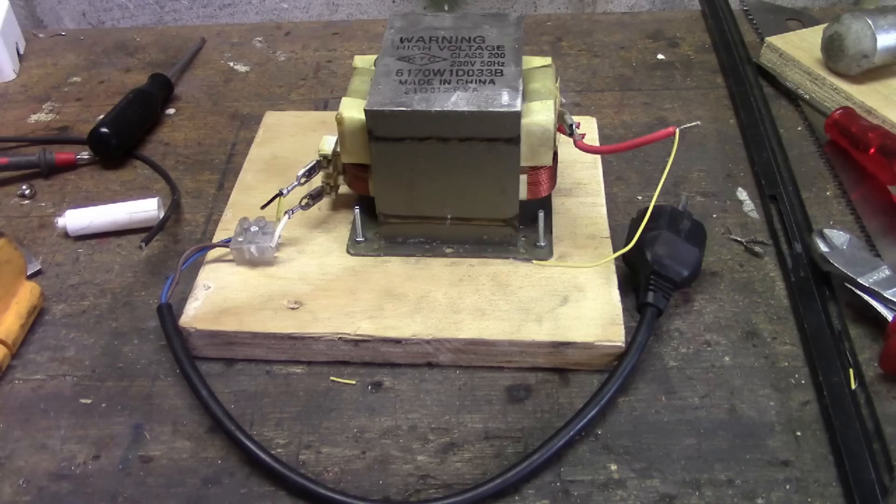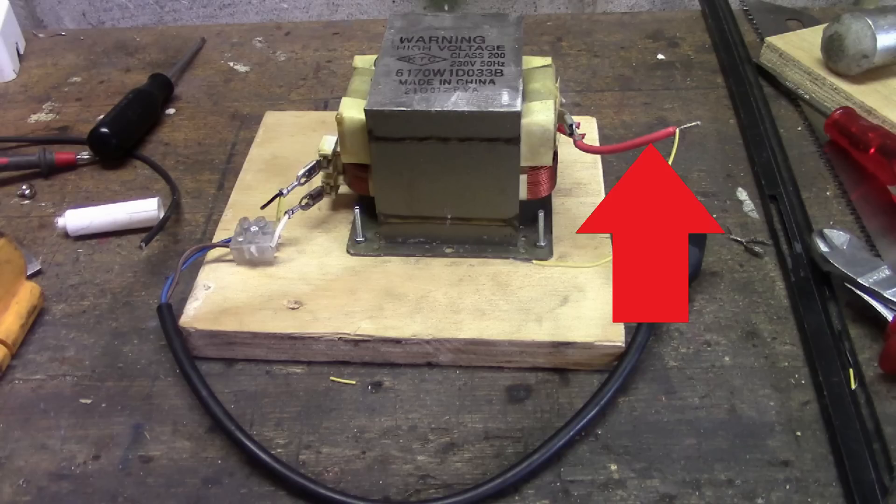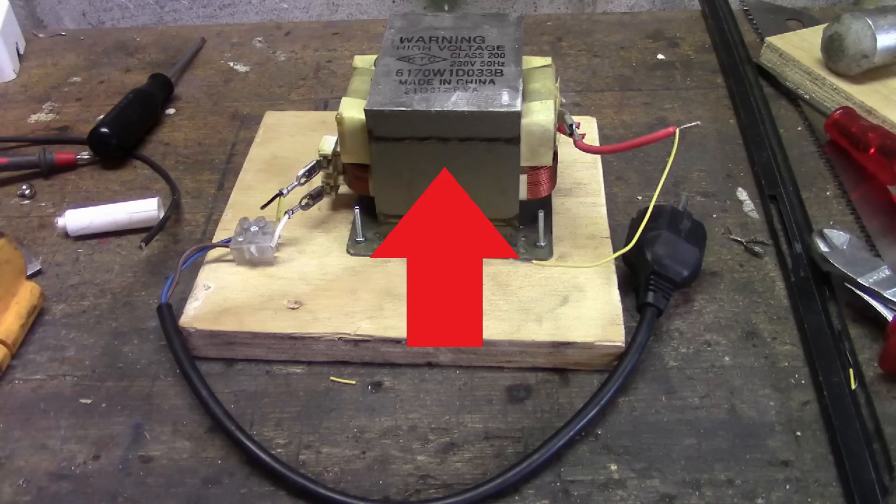Now that we've connected our power plug we can focus on the high voltage part of the transformer. One of the high voltage leads is this red wire and the other high voltage lead is connected internally to the core of the transformer. So the red wire is the first lead and the big block of metal is the second lead. The voltage between those leads will be about 2000 volts when the transformer is turned on so be careful.